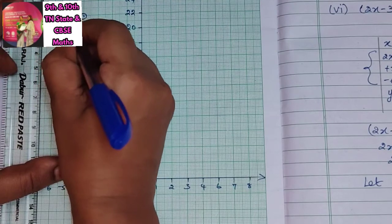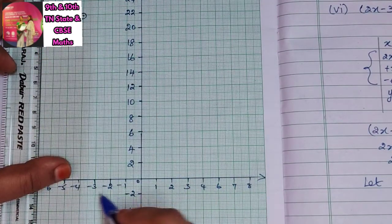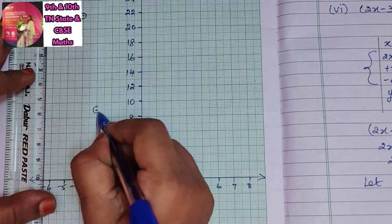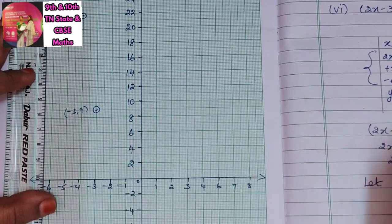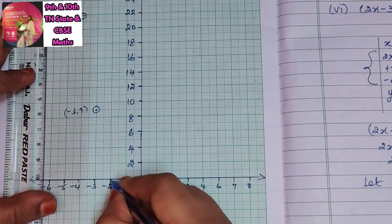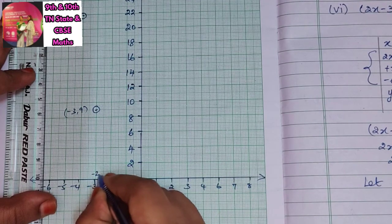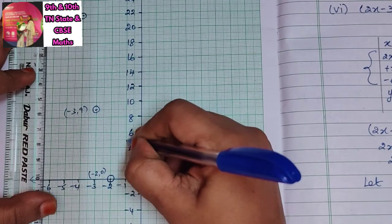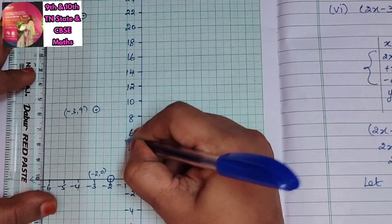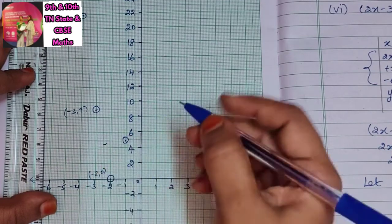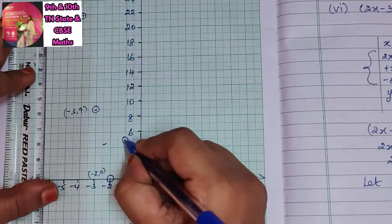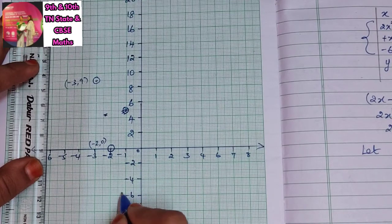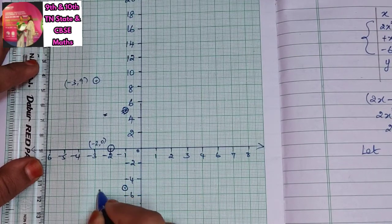On the graph sheet, the x-axis scale is 1 cm = 1 unit and the y-axis scale is 1 cm = 2 units. The first point (-4, 22) is plotted here. Then (-3, 9) is plotted here. Then (-2, 0) — this will be on the x-axis.